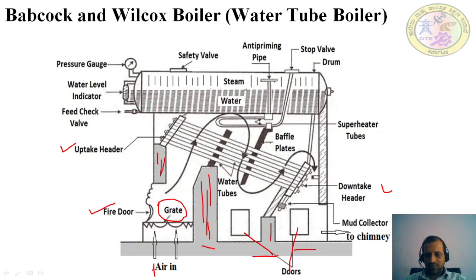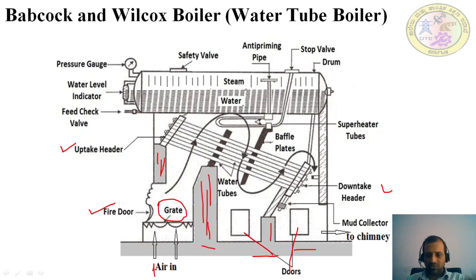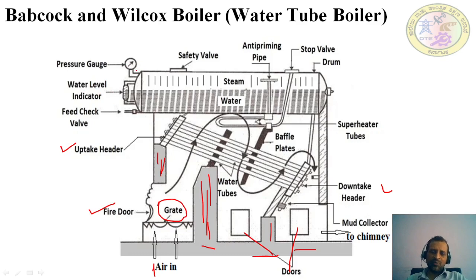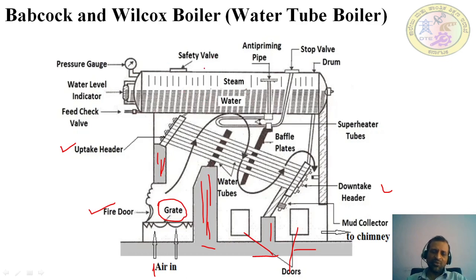When water is fed through the feed check valve, it enters the drum, where both water and steam are stored. The steam is stored in the upper portion and water in the bottom portion because of density difference. The water level indicator shows how much water is in the boiler, and the pressure gauge shows how much pressure is there in the boiler, based on which you can operate it.